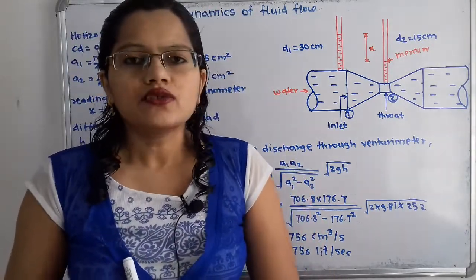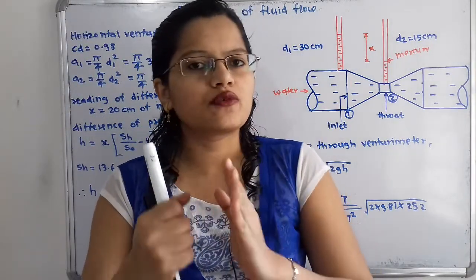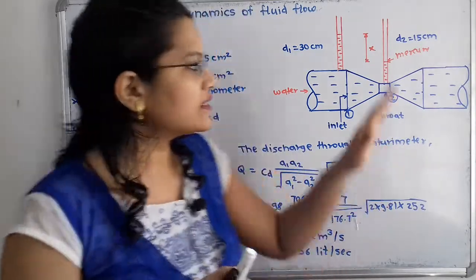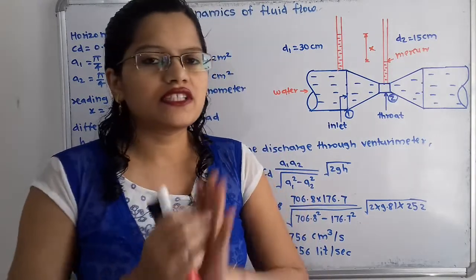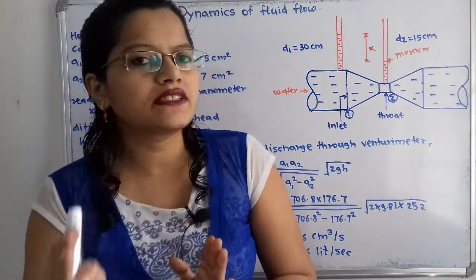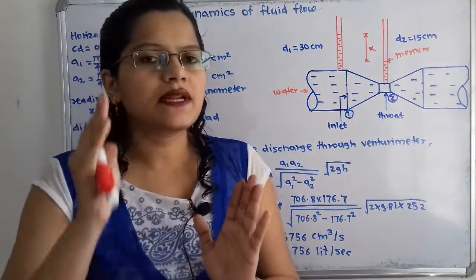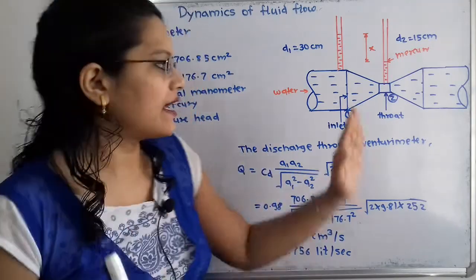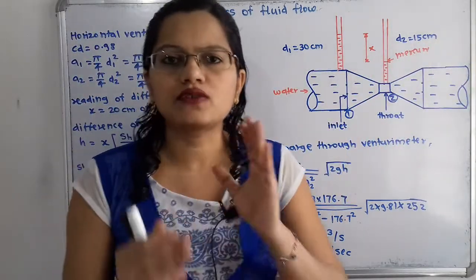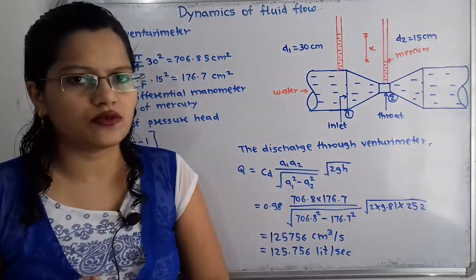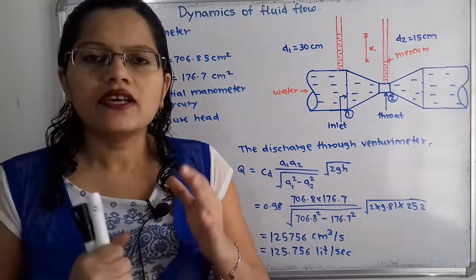We have to find out the pressure head difference h, where pressure head at section 1 is p1 by ρg and at section 2 is p2 by ρg. Applying Bernoulli's equation — pressure head plus kinetic head plus datum head — equating at section 1 and section 2. Since this is a horizontal venturimeter, z1 is equal to z2.